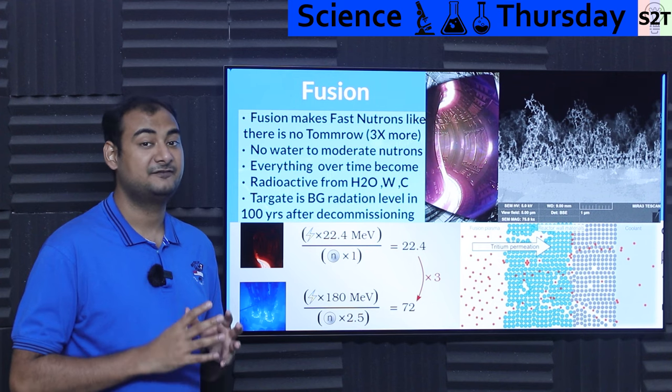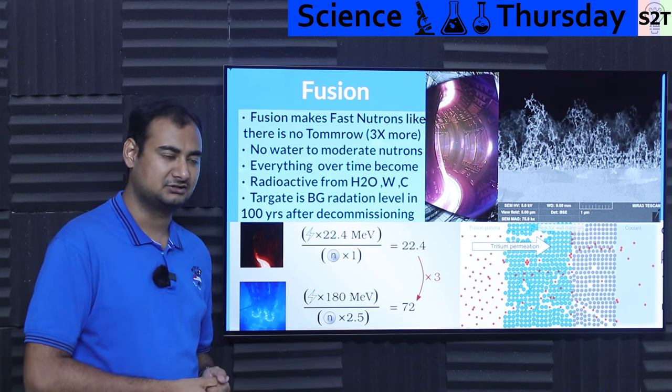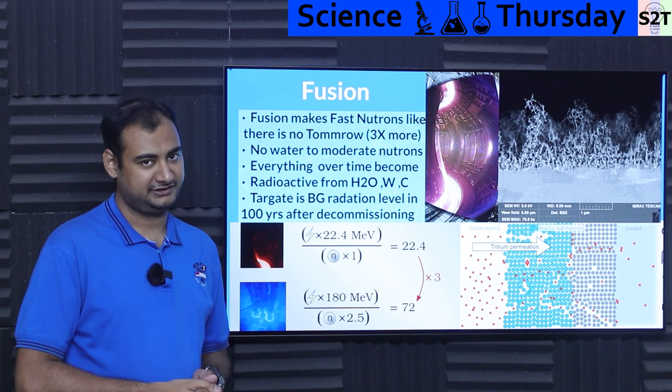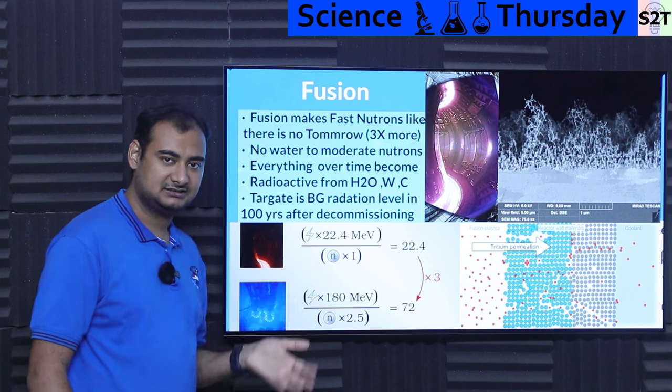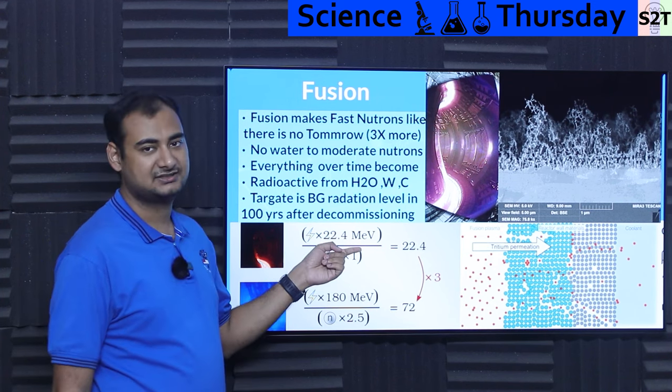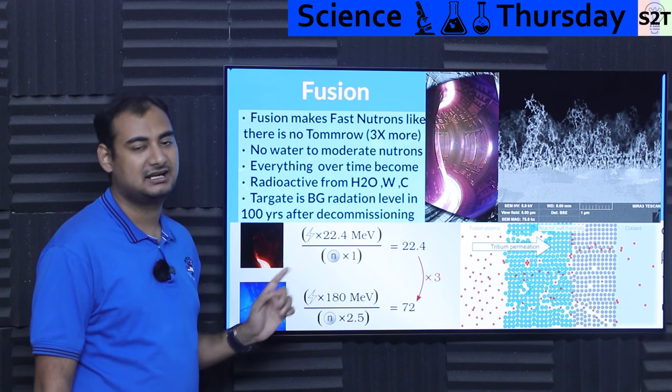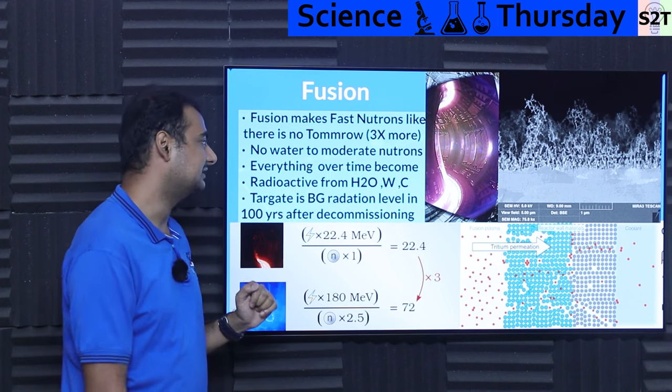Basically fusion makes fast neutrons. Well that's normal. That's like a fission power plant. That's not a hassle. But it makes way too much of it. Like there is no tomorrow kind of it. For example if you have fission. It's like okay I got this. I got this. But if you have the same oomph out of it. You're going to get 3x more. Like bonkersly large amount of it. I have linked the video from a nuclear physicist down below. So you can check that out. So be mindful. It's brutal.